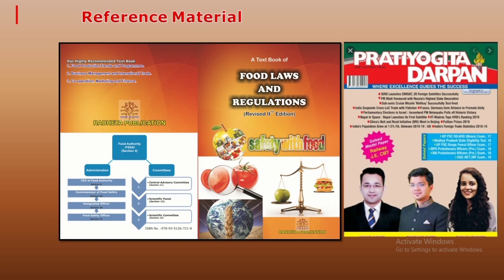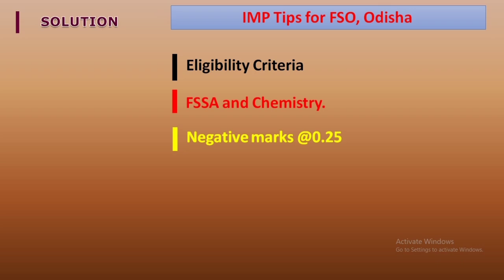Some important tips for the FSO Odisha exam: first, take care of the eligibility criteria — you must be able to read, write and speak Odia. For the technical section, there are two main areas: Food Safety Standards Act and Chemistry, each for 50 marks. Negative marking applies in the technical section. First aim to qualify the composite paper, then focus on the technical paper with high accuracy.